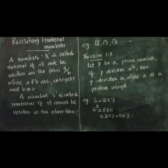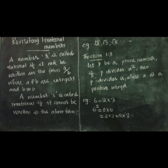Today we are going to discuss the topic: Revisiting Irrational Numbers. In class 9th, you were introduced to irrational numbers and many of their properties. You studied about their existence and how the rationals and the irrationals together made up the real numbers. You even studied how to locate irrationals on the number line. However, we did not prove that they were irrationals.